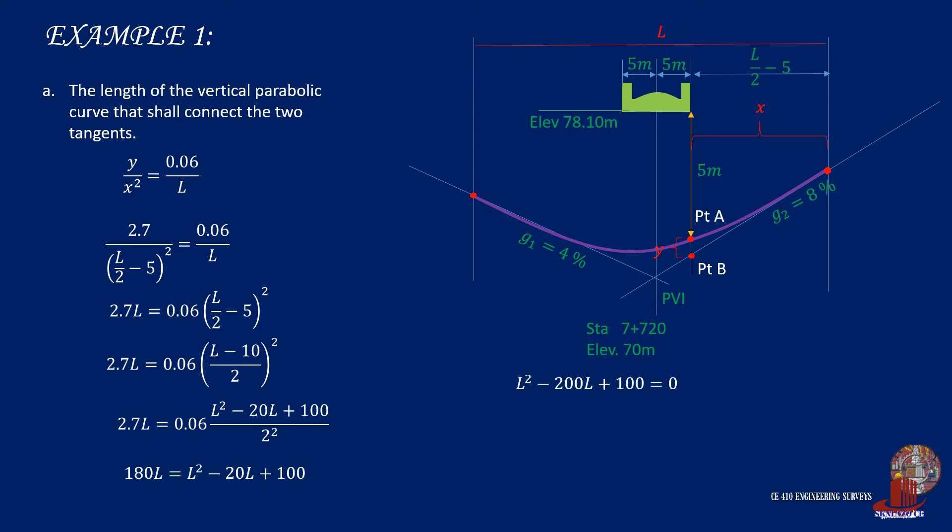Simplify the equation to get L squared minus 200L plus 100 equals 0. And by using the quadratic formula, we come up with the two values of the length of curve, the first being 199.5 meters and the second as 0.5 meters. The more feasible value of 199.5 will be adopted.